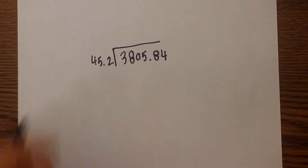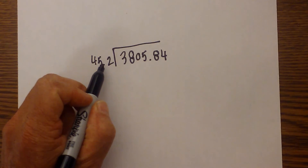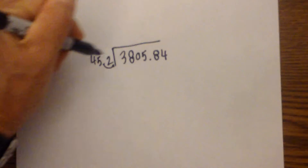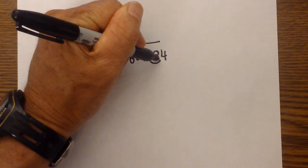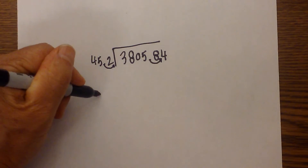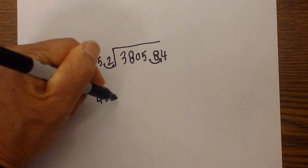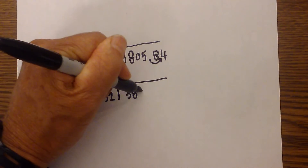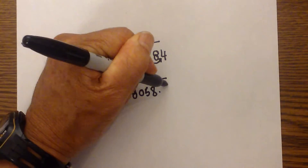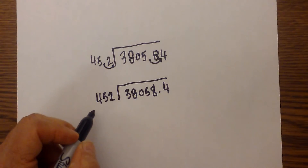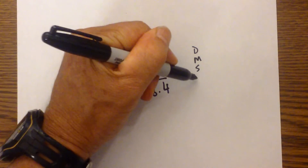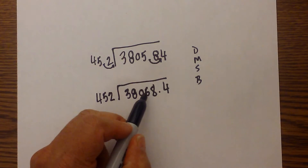Since we have a decimal on the outside or in the divisor, we need to rewrite this and move it one place to the right. And remember, what we do to the divisor, we need to do to the dividend, so we move it one place to the right. I'm going to rewrite it so that it is not messy. So it becomes 38,058.4 divided by 452. We now just follow dad, mom, sister, brother — and first we divide.